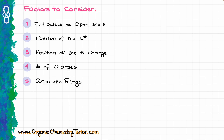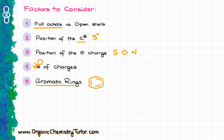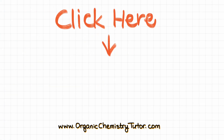Whenever you are evaluating your resonance contributors: prioritize full octets; prioritize contributors with the carbocation on the tertiary position; when you have a negative charge, prefer larger atoms like sulfur or more electronegative atoms like oxygen or nitrogen; prioritize contributors with no charges over contributors with charges; and if you have any aromatic rings, prioritize structures with an intact aromatic ring. Now you know how to determine your major versus minor resonance contributors with ease. Thank you for watching! If you learned something new today, hit the like button and let me know in the comments. Go to OrganicChemistryTutor.com for more practice questions.